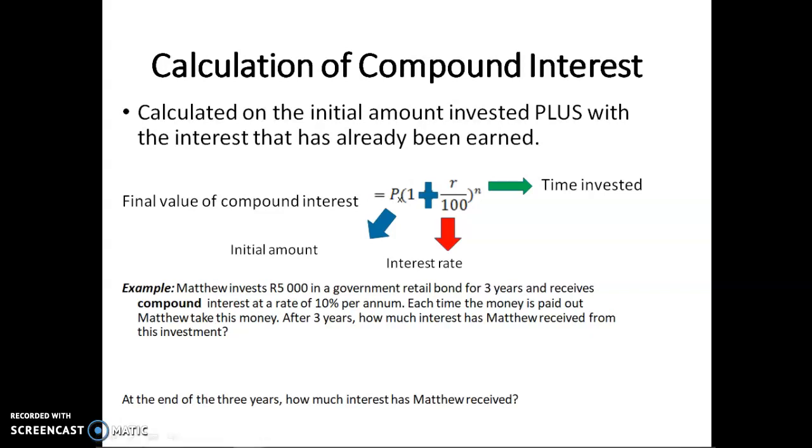After three years, how much interest has Matthew received from this investment? My principal amount is 5,000, times, open your brackets, 1 plus 10 over 100 to three years, and the answer is 6,655.